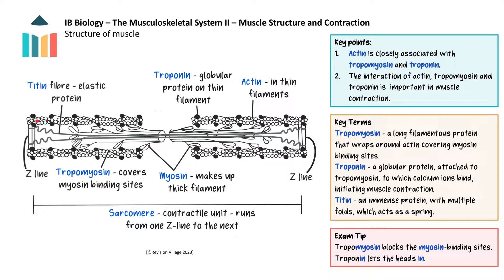Looking at this diagram, you can see the thick filaments in the middle with the myosin tail and its two protruding heads. The thin filament contains actin but also two more proteins: tropomyosin and troponin, which are very important in regulating muscle contraction. Tropomyosin is a long thin molecule that wraps around the actin filament covering the binding sites for the myosin heads. Troponin is a globular protein found at intervals along the tropomyosin. Additionally, titin is an immense protein with multiple folds that works like a spring, helping the sarcomere recoil after contraction and preventing overstretching.